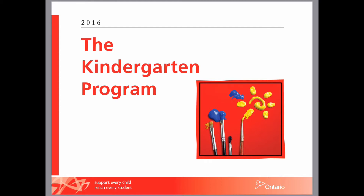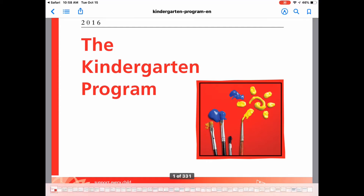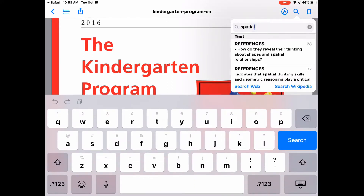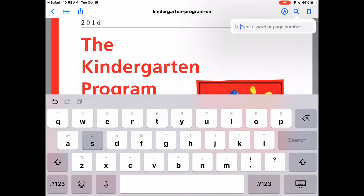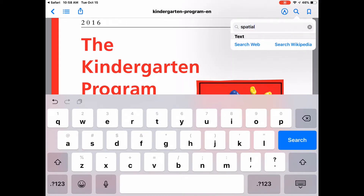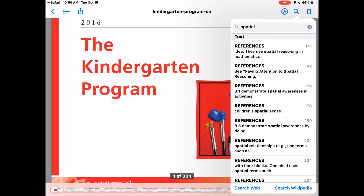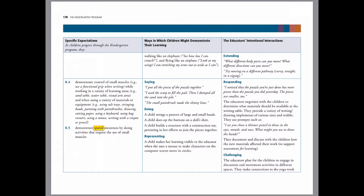From there you can just tap on the screen and you'll get a few options, one of them being the magnifying glass. You can type in any keyword that you want — I typed in "spatial" — and once you click search it'll take a few seconds for all of the results to come up depending on your Wi-Fi. You can look at the different references for the keyword and it'll bring you straight to that page and highlight that word for you.